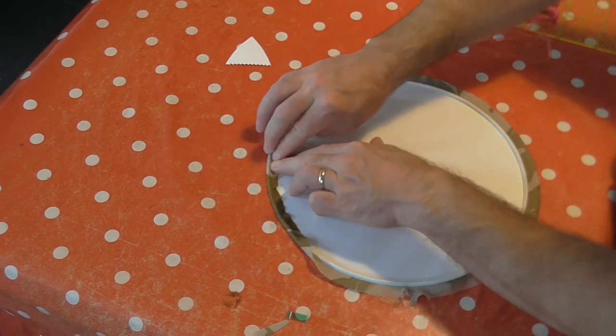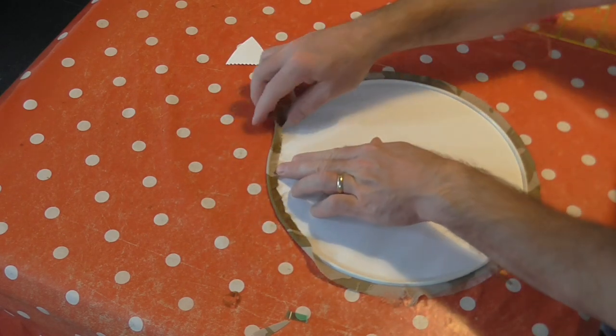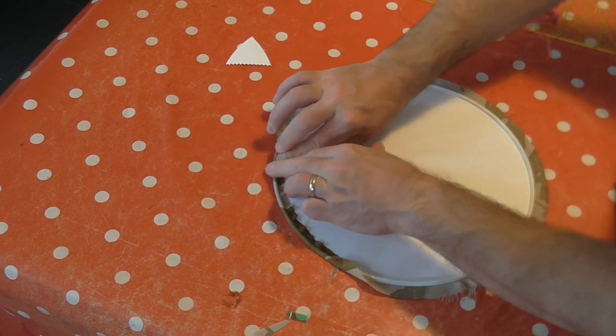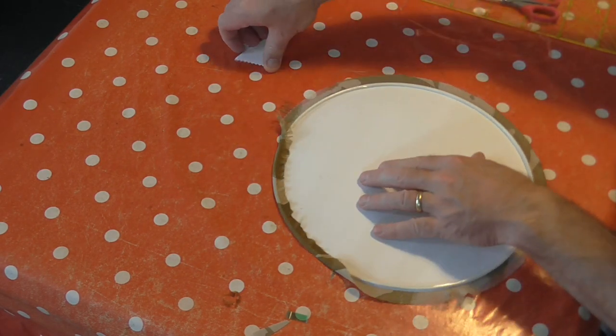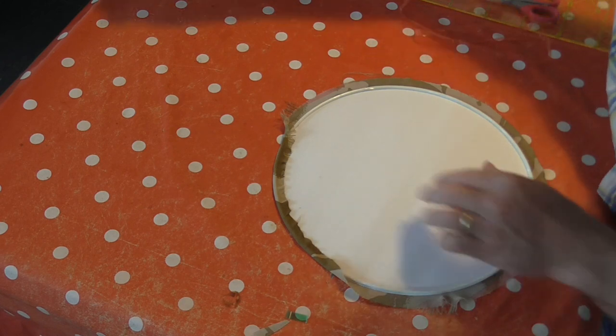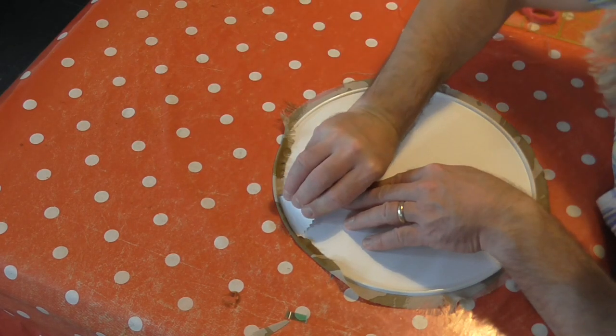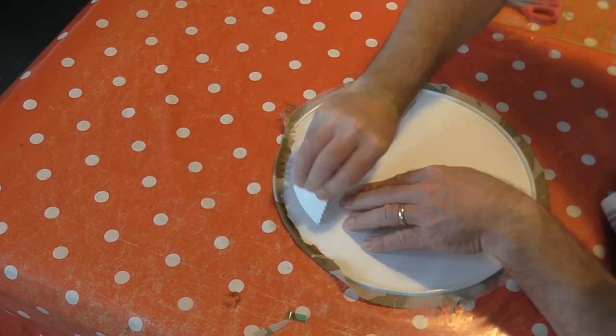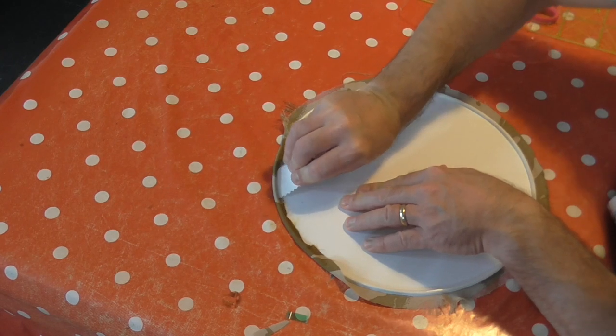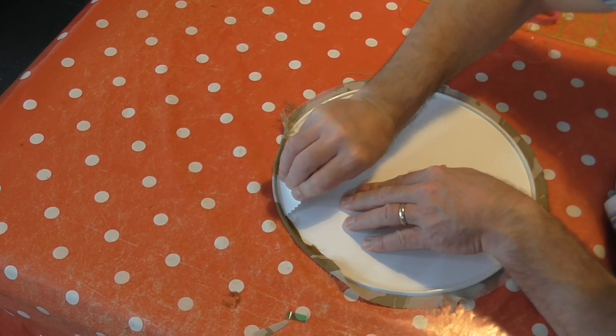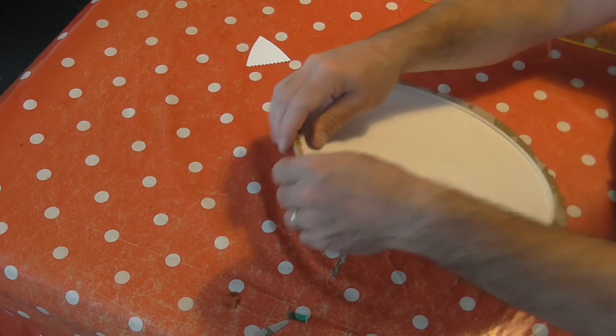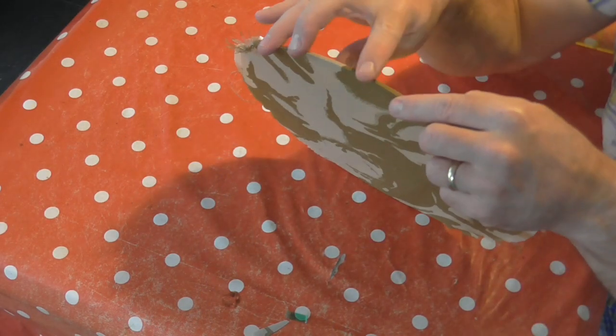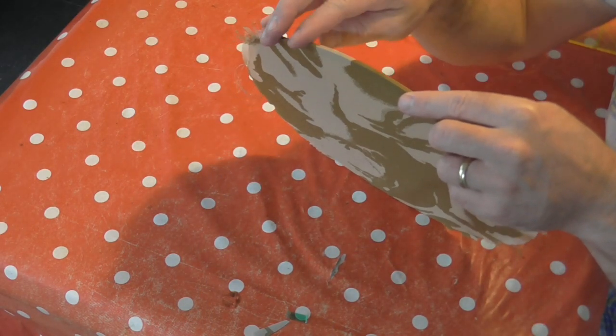This is what's going to make it look really neat and tidy on the front. And with your tool, you push all of that fabric right in underneath the metal ring to get a really nice tight edge. And we're going to do that all the way around.